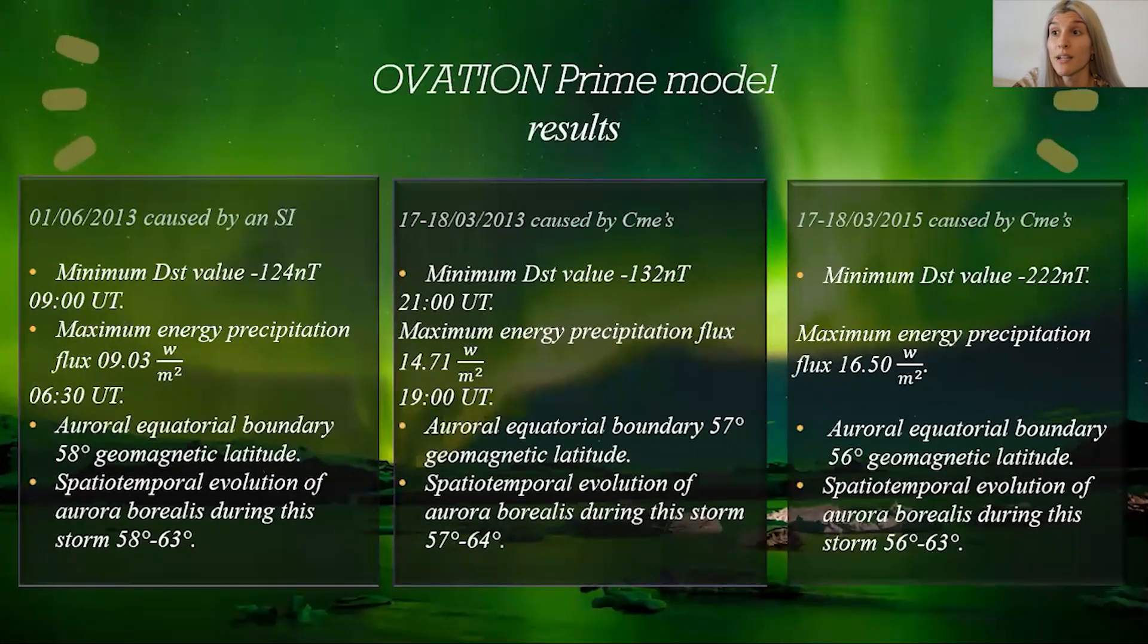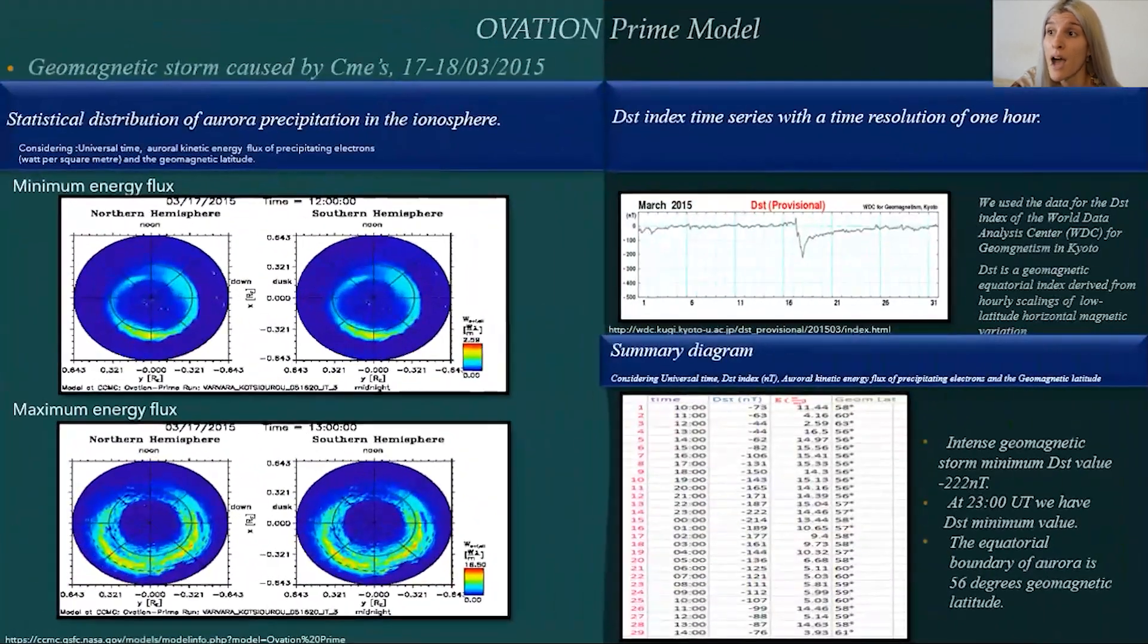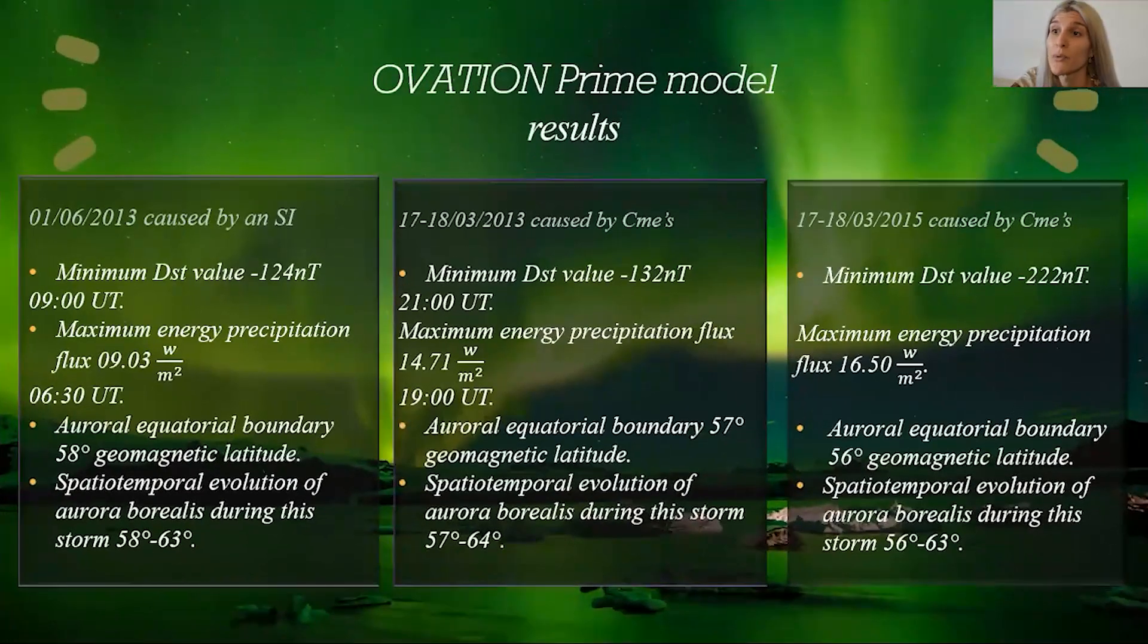Now we are ready to summarize briefly the conclusion of our results. Firstly, the reason for the difference during a SI-CME storm is likely to arise from the nature of the interplanetary magnetic field. During CMEs, there is usually a large persistent southward turning of the IMF accompanied by high solar wind speed.